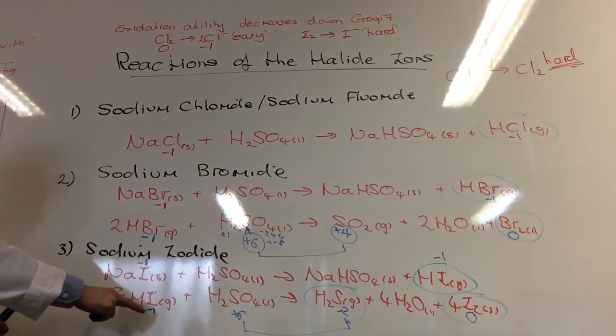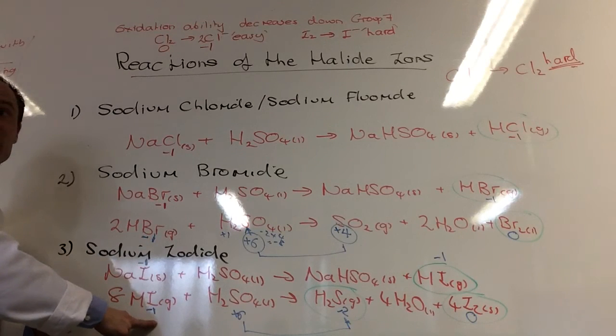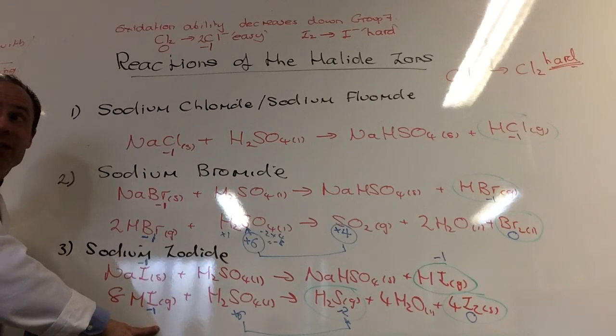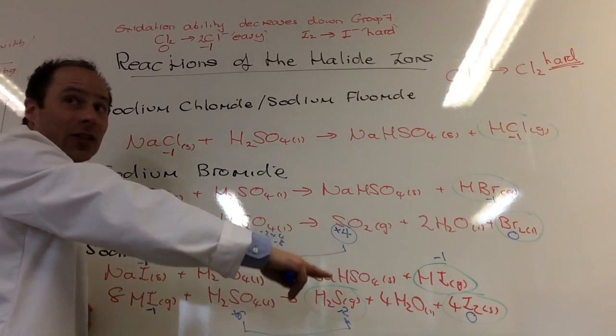So I'm saying that iodide is easier to lose an electron because the electron is further away from the nucleus and therefore more easier than that. So it's like metals.